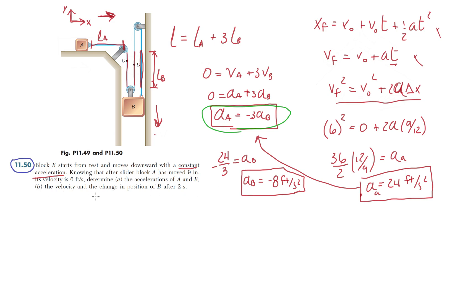Now part B, the velocity and the changing position of B after two seconds. And again, looking at these kinematic equations here, we can see which one from our toolbox is going to work out for us. And again, remember, this is for constant acceleration. Can't stress that enough. Constant acceleration allows us to use the easy equations. No integration, no derivatives, no nothing. So the velocity and the changing position of B after two seconds.